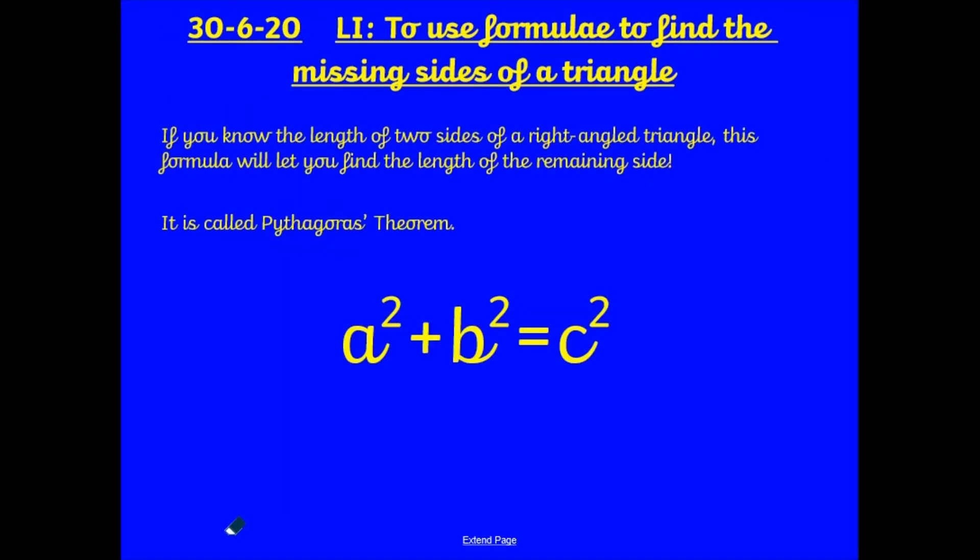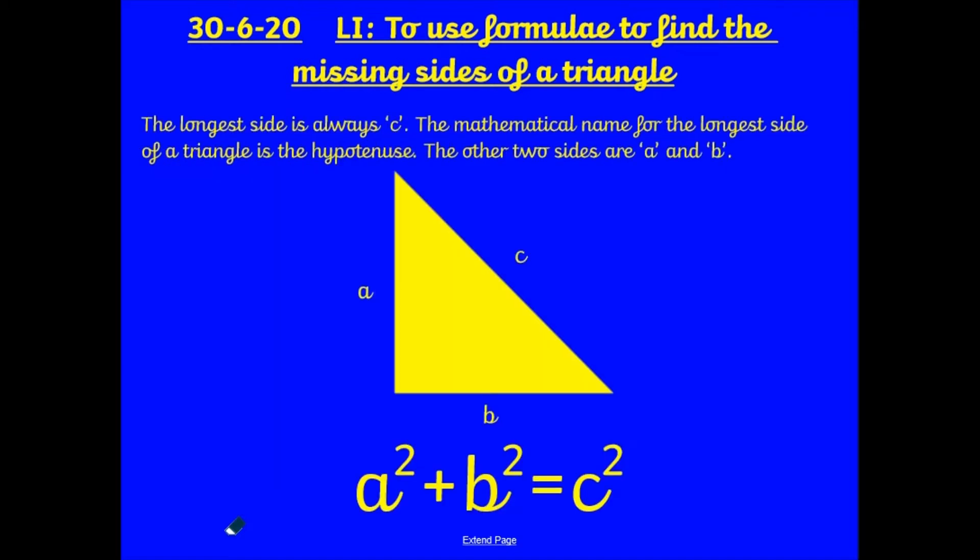Now, if you know the length of two sides of a right-angled triangle, this formula will let you find the length of the remaining side, and it's called the Pythagoras theorem. It's a² + b² = c². The longest side of a triangle will always be labelled as c. a and b, wouldn't matter which way round, the longest side is always going to be c, and this is called the hypotenuse.